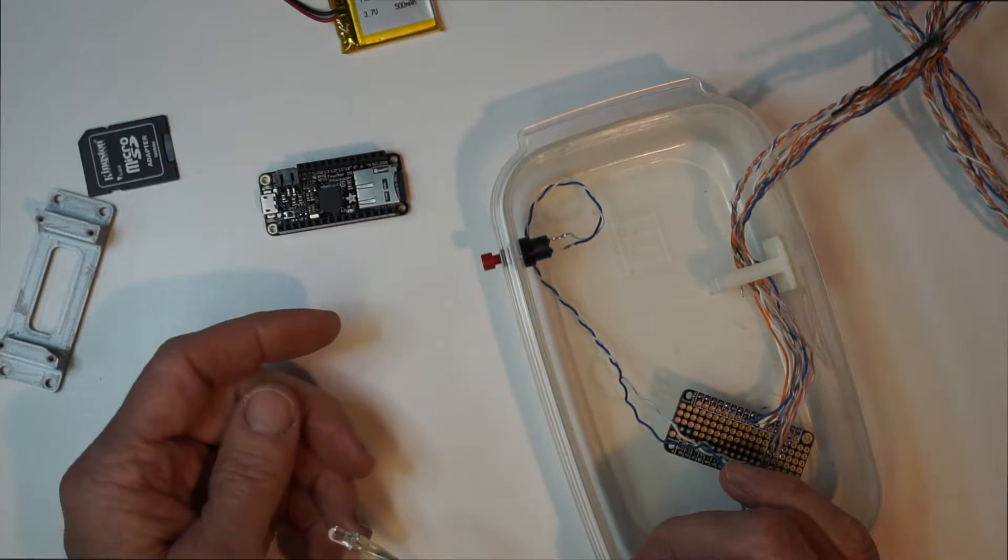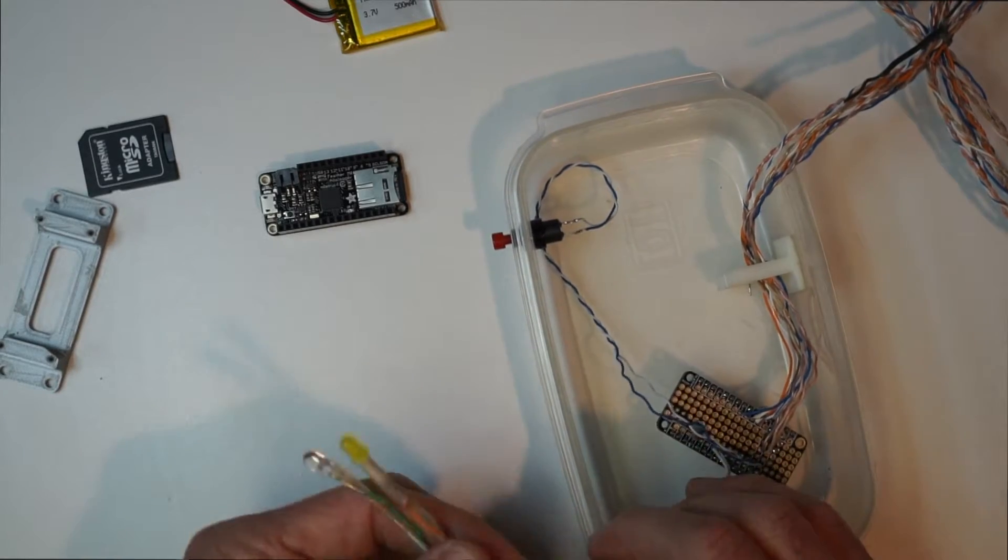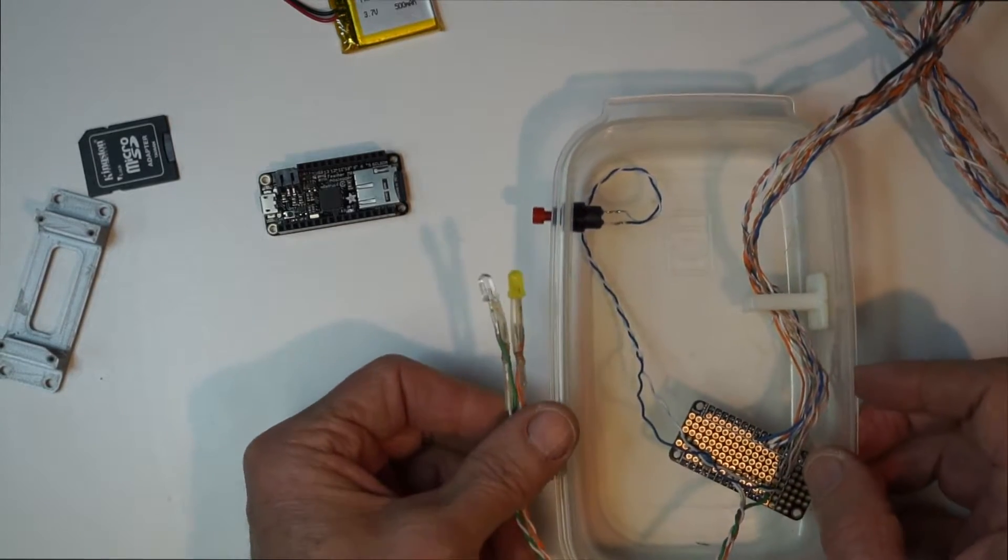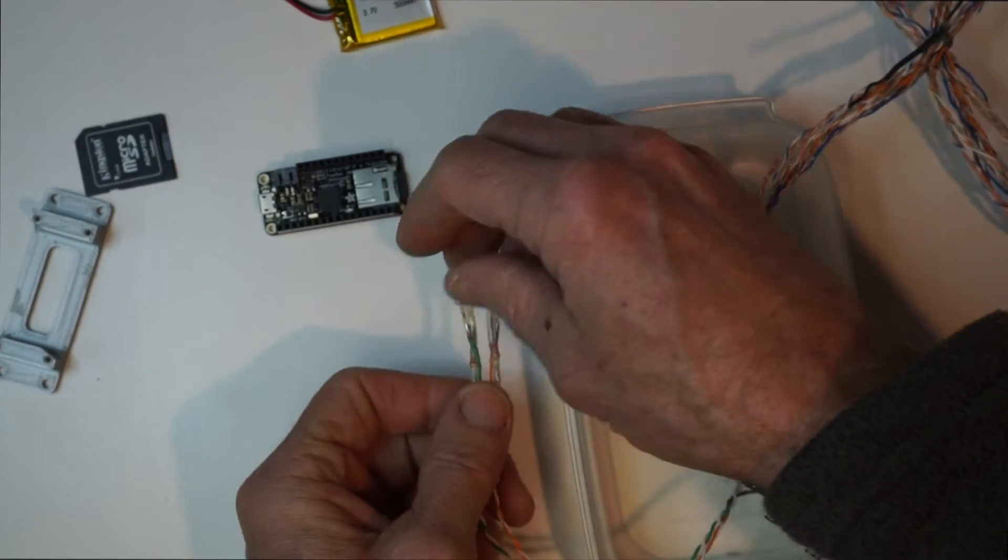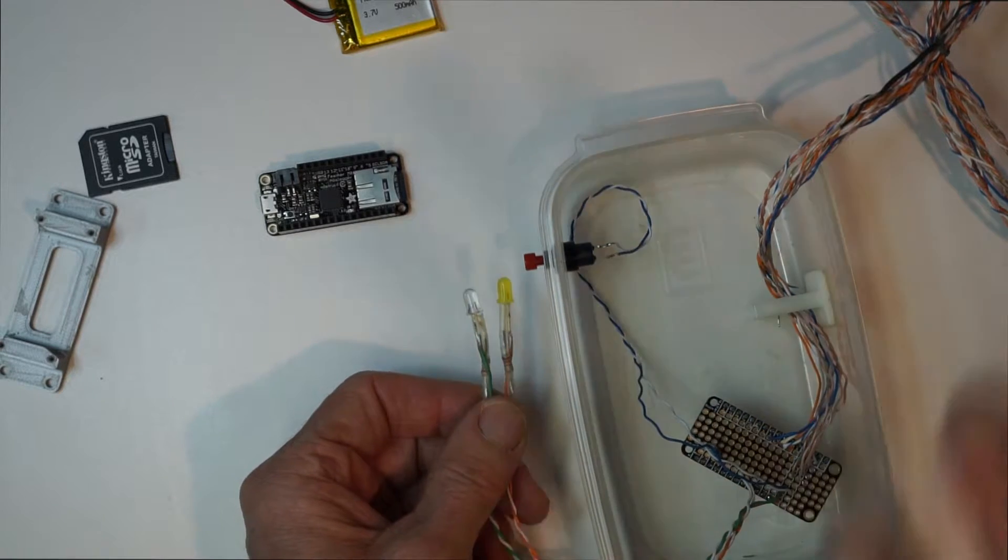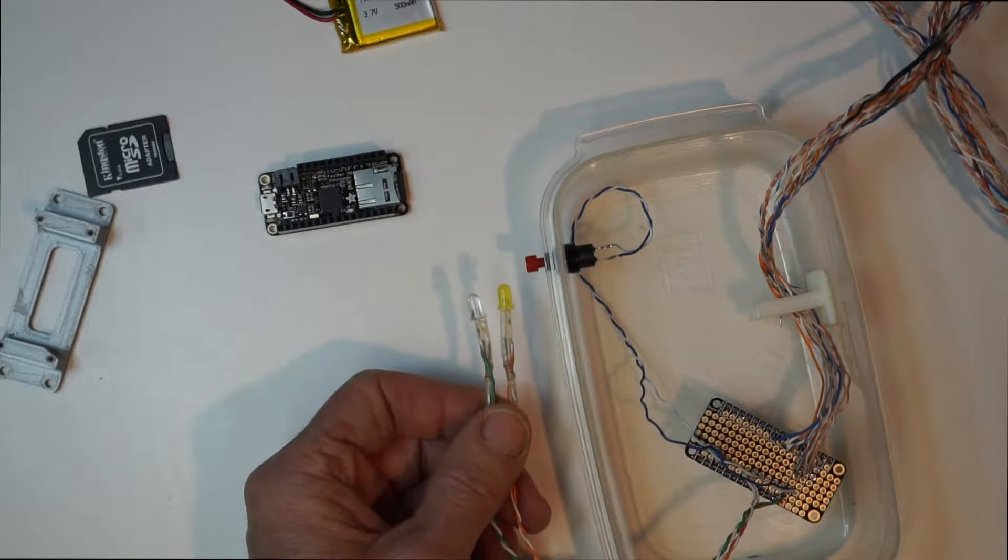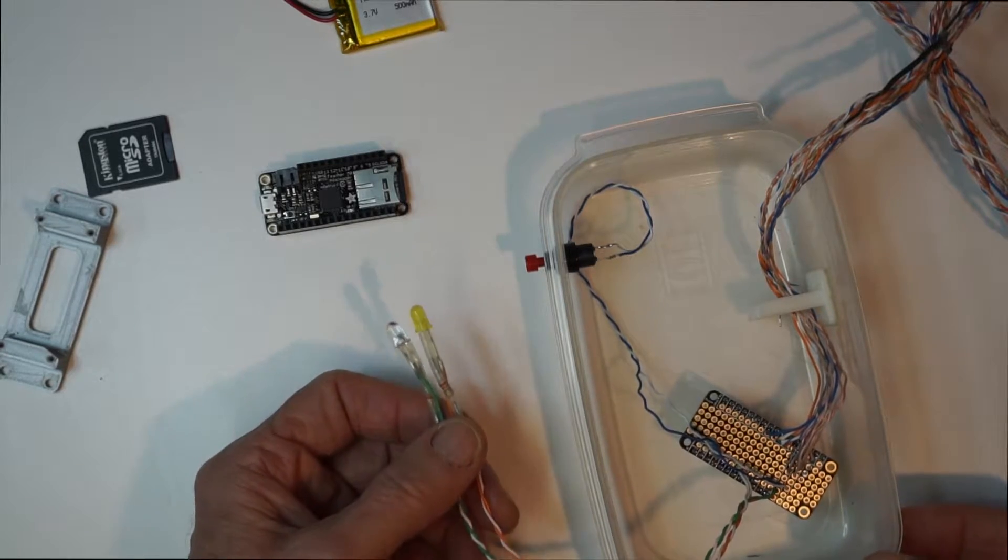The push button allows me to interrupt what's happening. Basically, it's the user interface of this entire system as currently configured. The user interface consists of a button and two LEDs. So I want to show you how those work. But first, I need to put this system back together.